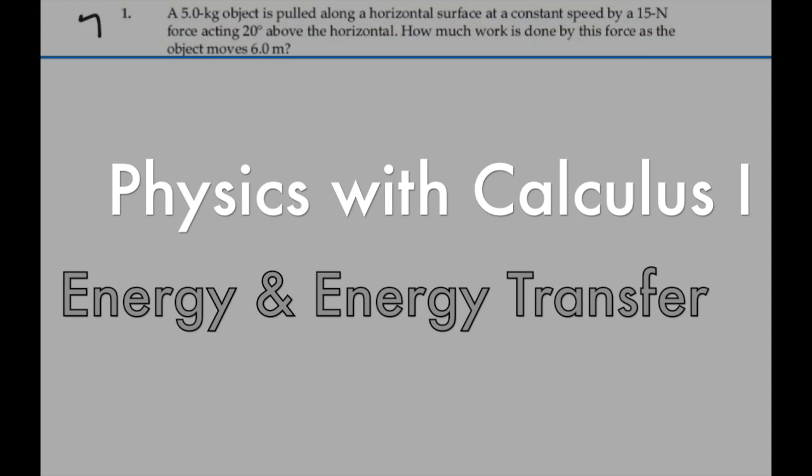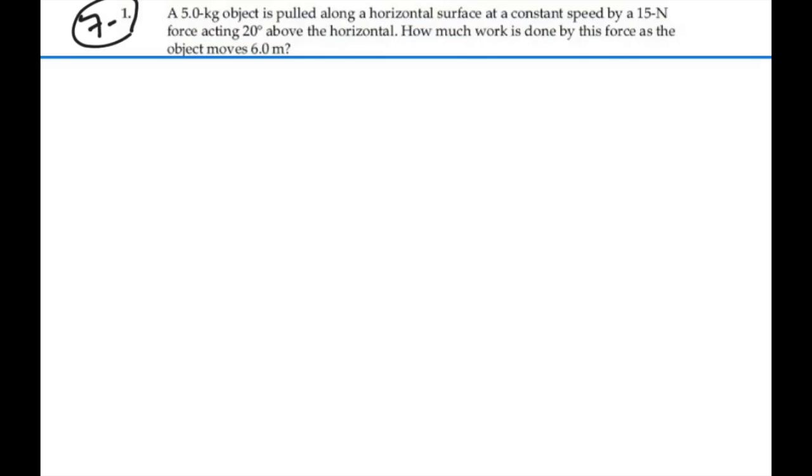Here's problem 7.1. A 5 kilogram object is pulled along a horizontal surface at a constant speed by a 15 newton force acting 20 degrees above the horizontal. How much work is done by this force as the object moves 6 meters?